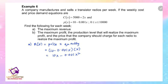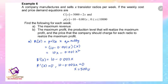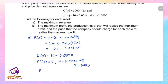To find the maximum revenue, we find the marginal revenue and equate it to zero. R'(x) = 10 - 0.002x. Setting R'(x) = 0: 10 - 0.002x = 0, so x = 5000.